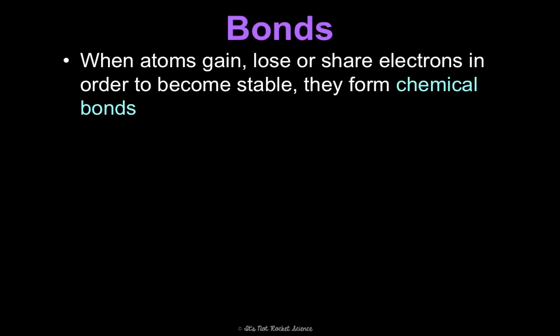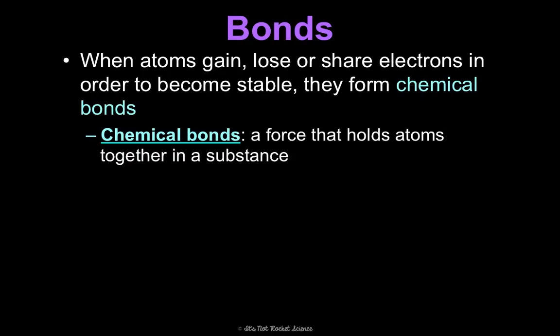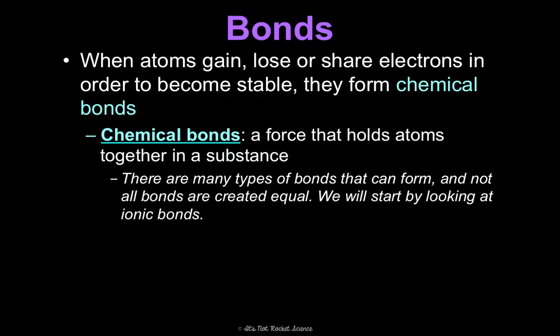Now let's talk more about these bonds. Chemical bonds are formed when atoms gain, lose, or share electrons in order to become stable. A bond is formed when sodium gives up its one valence electron to chlorine. The formal definition: a chemical bond is a force that holds atoms together in a substance. There are lots of types of bonds that can form. We'll learn about some this year and some in biology, but we're going to start with ionic bonds.